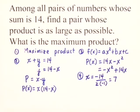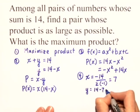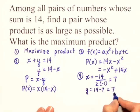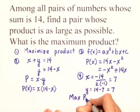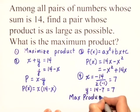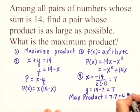So what is the maximum product? Well, if x is equal to 7, then y has to equal 14 minus 7, or y is also 7. So our maximum product is equal to 7 times 7, or 49.